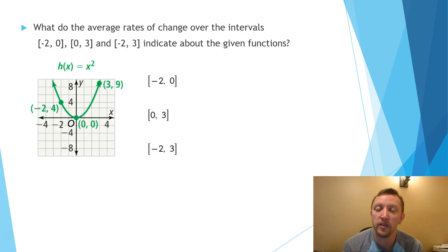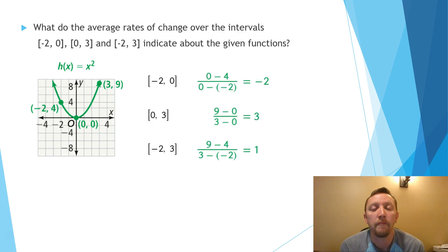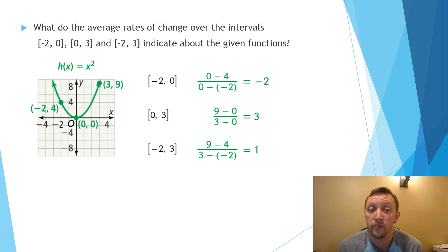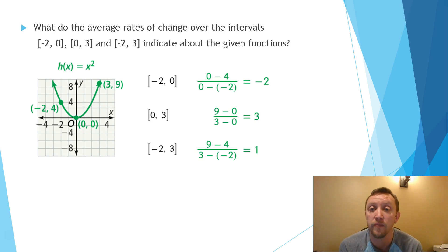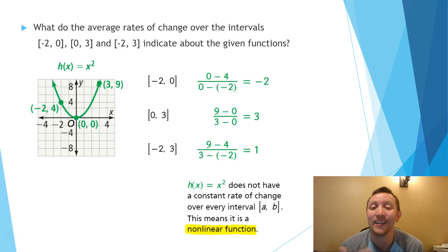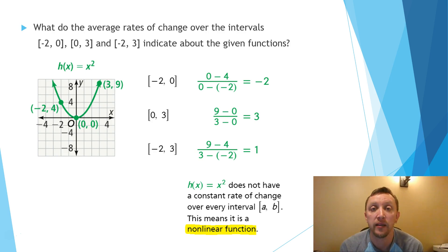Now this graph is clearly not linear. If we find the rate of change between x = -2 and x = 0 — where the coordinates are (-2, 4) and (0, 0) — we take 0 minus 4 divided by 0 minus negative 2, giving a rate of change of negative 2. From 0 to 3, we get a positive rate of change of 3. Between negative 2 and 3, we get a positive rate of change of 1. They're all different, so it is not linear. Anytime the rates of change between sets of coordinates are different, we know it's not a linear function.